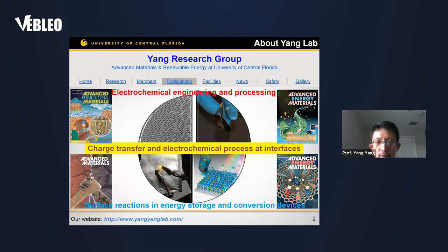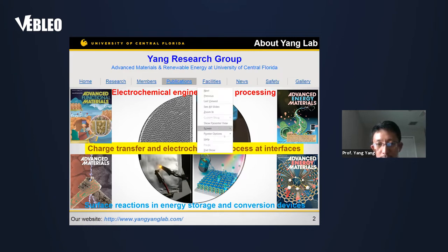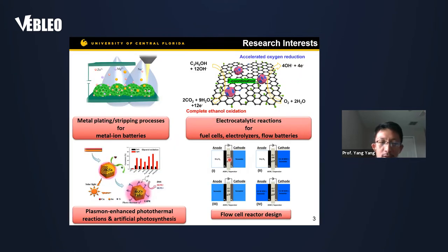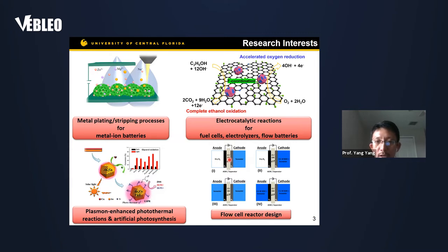We are very interested in studying the charge transfer and electrochemical processes at the interface. We are also very interested in studying non-aqueous batteries, particularly the anode surface — trying to see what the electrochemical process is on the surface of the metal. We are also interested in developing carbon-based catalysts, particularly studying carbon corrosion in fuel cells and other electrochemical devices that use carbon as an additive.